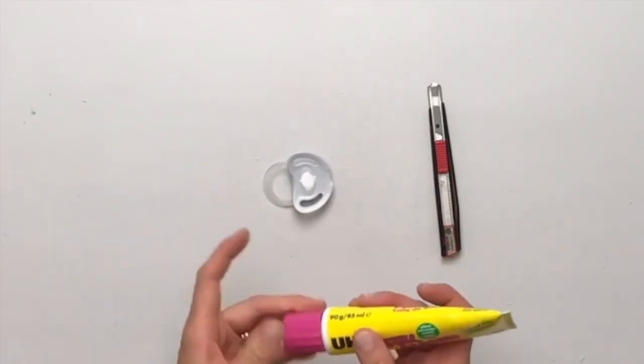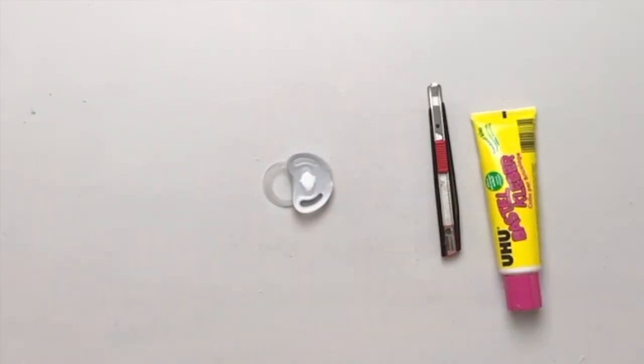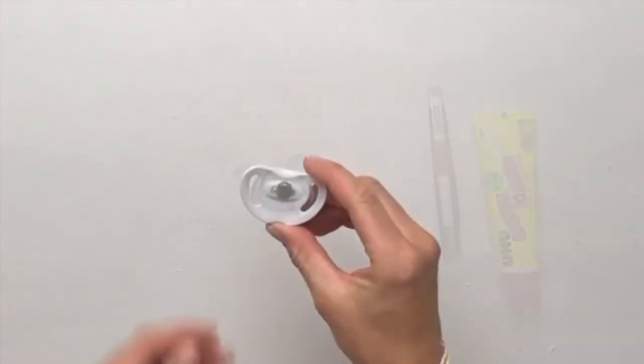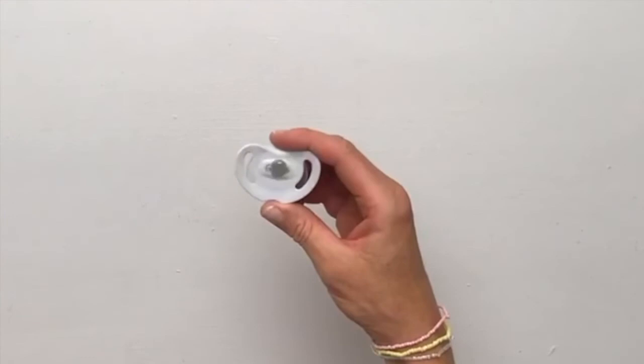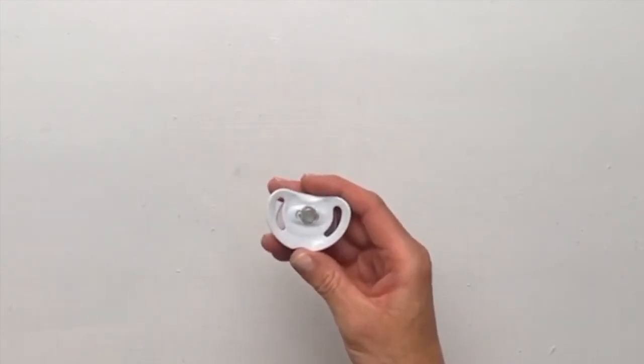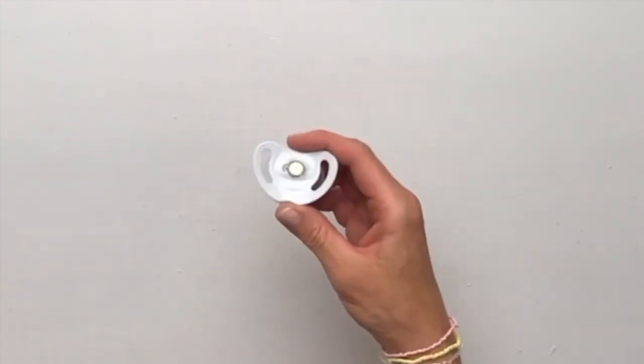And now you just let it dry for a few hours, or actually better for a whole day or at least overnight until it's completely dry. You can also put it on the heater if you want to dry it faster. And this is what the pacifier looks like when it's completely dry.